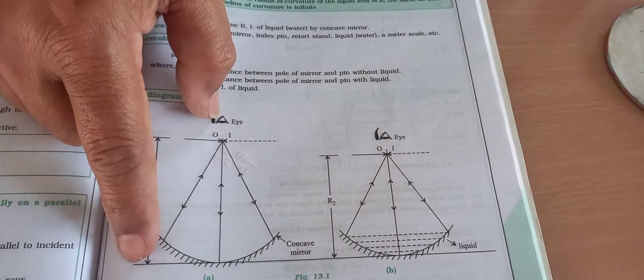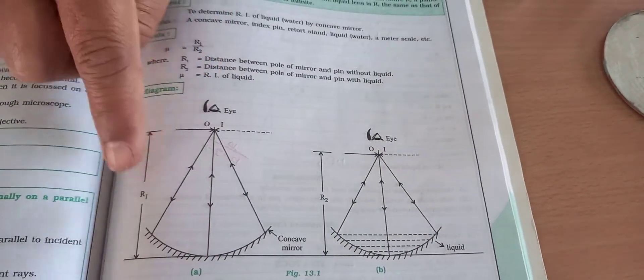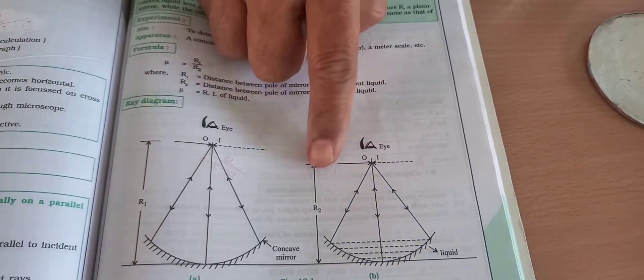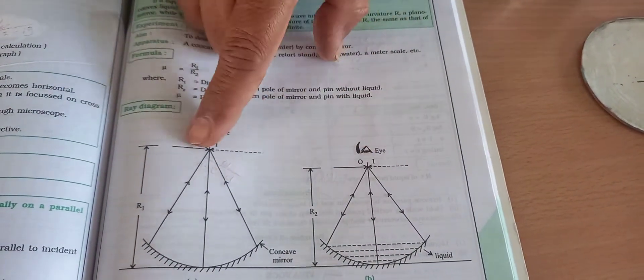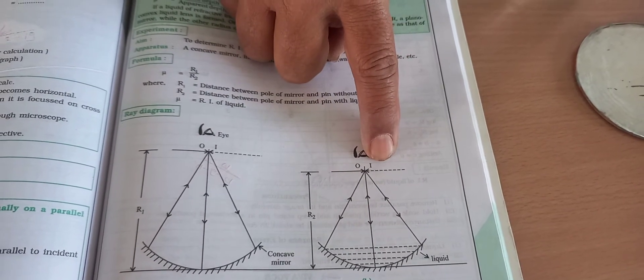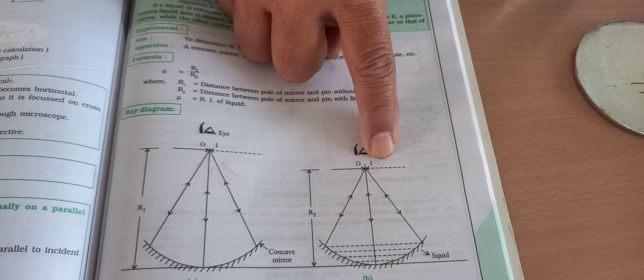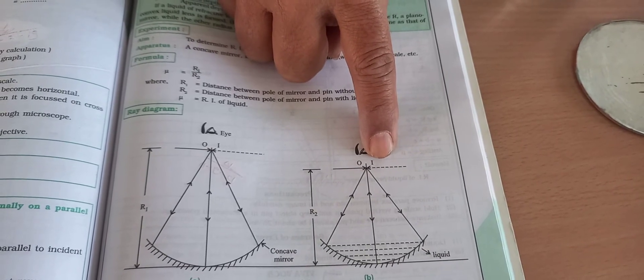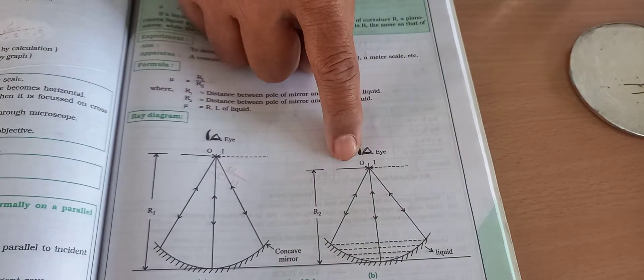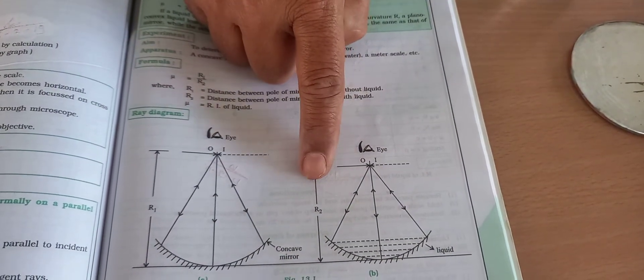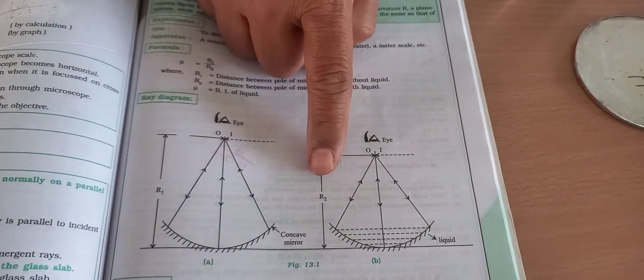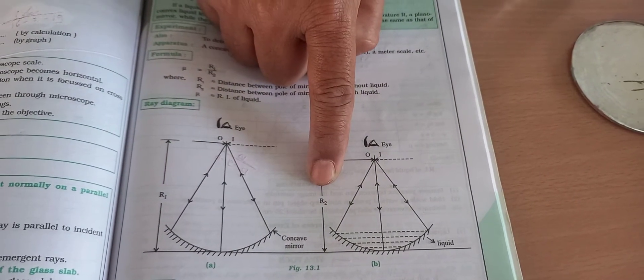What is r2? If liquid is introduced, then again using the same method, we try to get a sharp inverted image exactly opposite to the object. At that time, we measure the distance from horizontal surface to the index pin. That distance is called r2. From the diagram we can understand that r1 is bigger than r2. Let us see how to find r1 first.